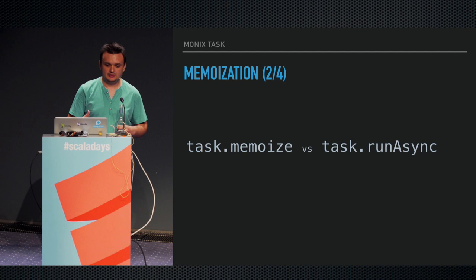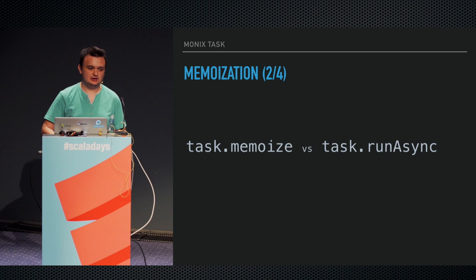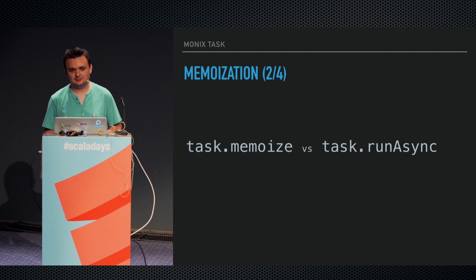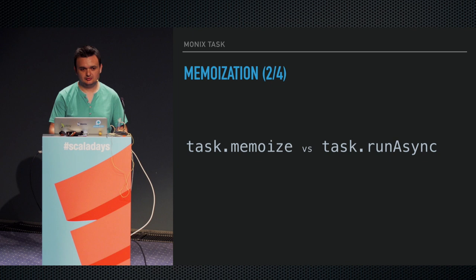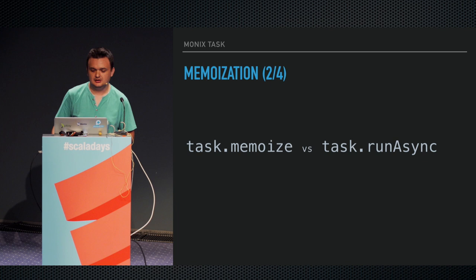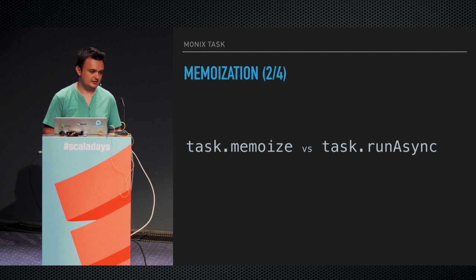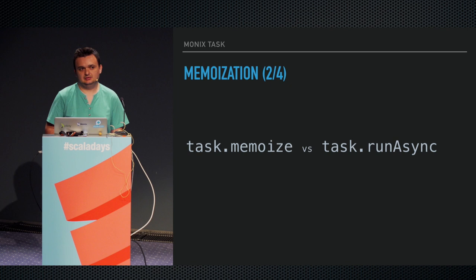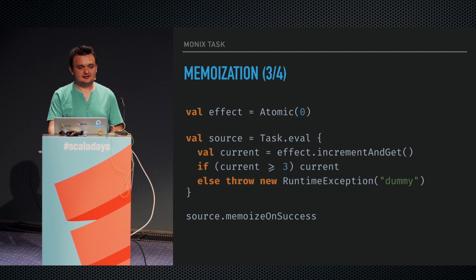When talking about futures, the future itself is a memoized value — once you have a completed future, you can reuse it multiple times and be sure that execution happened only once. The difference between runAsync returning a future and doing memoization is laziness versus eagerness. Memoize will happen when the task is actually being executed. And here's something that Future cannot do easily.